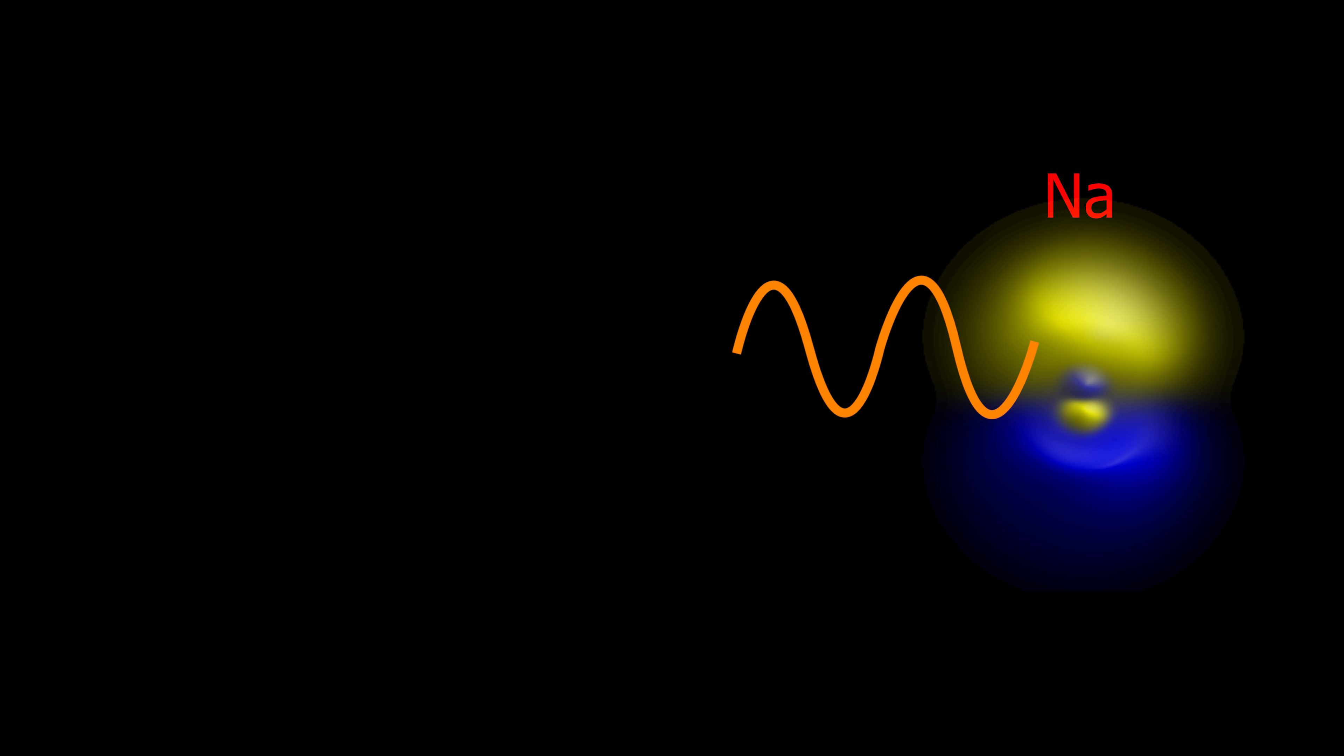Now this is the important part: once you've created those sodium vapor atoms, if you shine a very specific frequency of light on them, you can get the electrons in the sodium atoms to jump from the 3s orbital to the 3p orbital. And when they do that, it actually absorbs that specific photon of light.